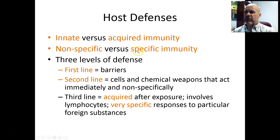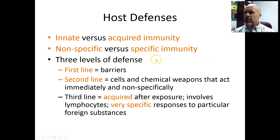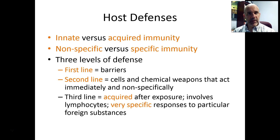Another way to look at this is nonspecific versus specific immunity. Nonspecific means we have features and weapons of the immune system that are not directed to any specific microbial species or strain — things that either block microorganisms from getting into the body or, as soon as they enter, an arsenal of cells and protein weapons that can attack the majority of microorganisms immediately. Specific immunity, covered in Chapter 13, is also called acquired or adaptive immunity.